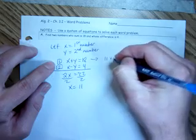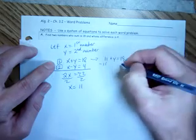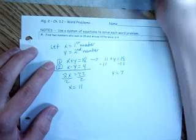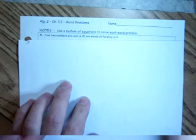So if the word problem starts referring to these variables as smaller number and larger number, you must make sure that whatever variable refers to the larger number is always written first.